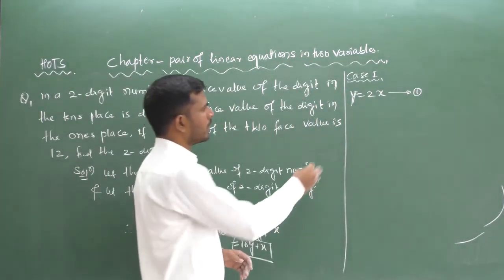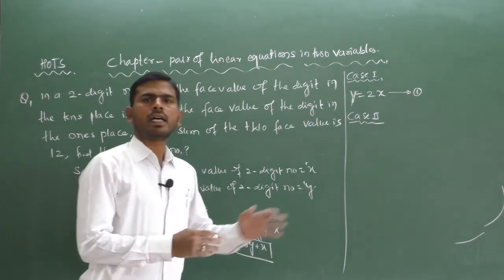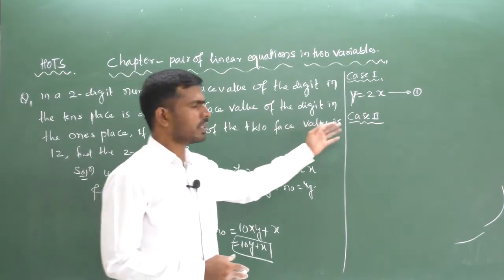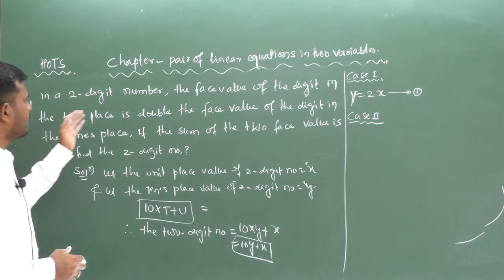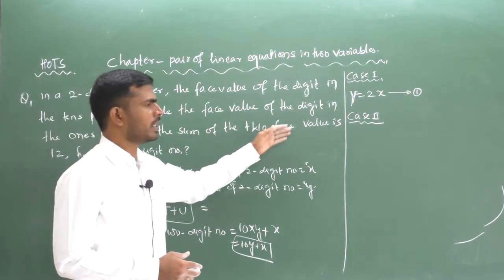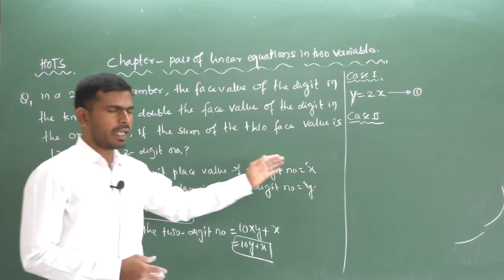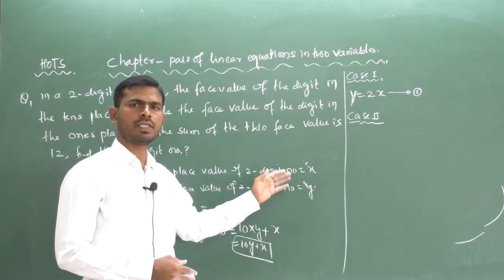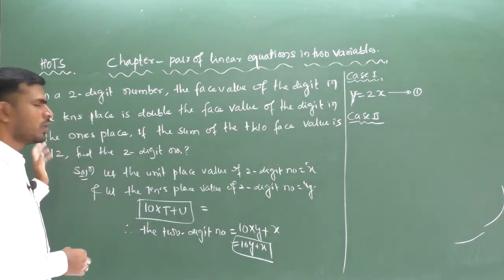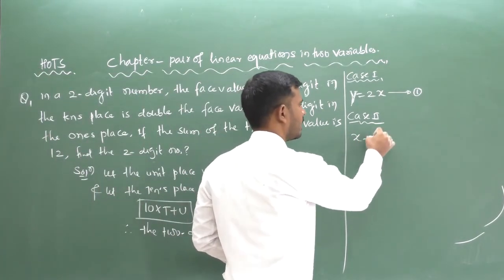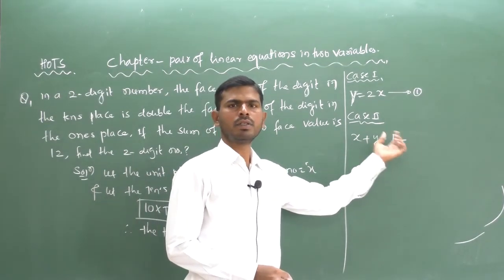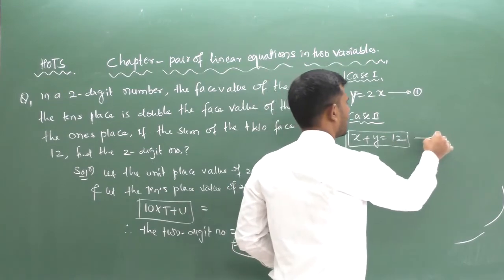Case 2: the sum of the two face values is 12. Here x is the face value of the units digit and y is the face value of the tens digit — face value remains constant, only place value changes. So for Case 2: x + y = 12. This is Equation 2.